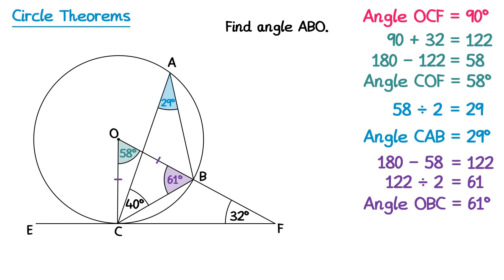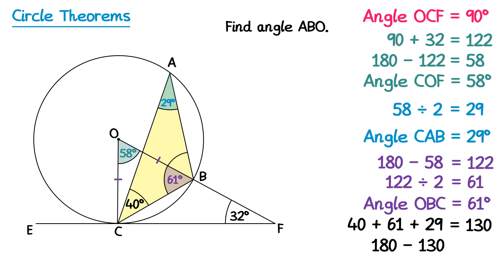Now finally, looking at triangle ABC, we're only one step away from finding angle ABO, which was required in the question. All of the interior angles of the triangle must make 180 degrees. So if we add up the angles we have — 40 plus 61 plus 29 makes 130 — and if we subtract this from 180, you get 50 degrees, which is the answer: angle ABO equals 50 degrees.